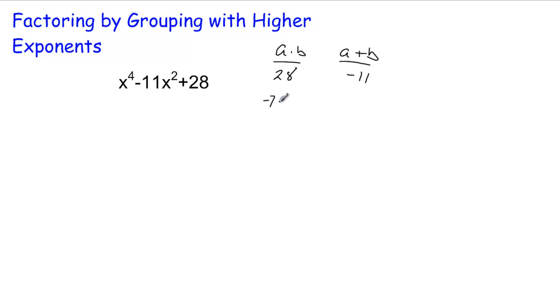Well, negative 7 and negative 4. Notice those do add up. Sometimes there's a little trial and error here, but they're not hard to find.